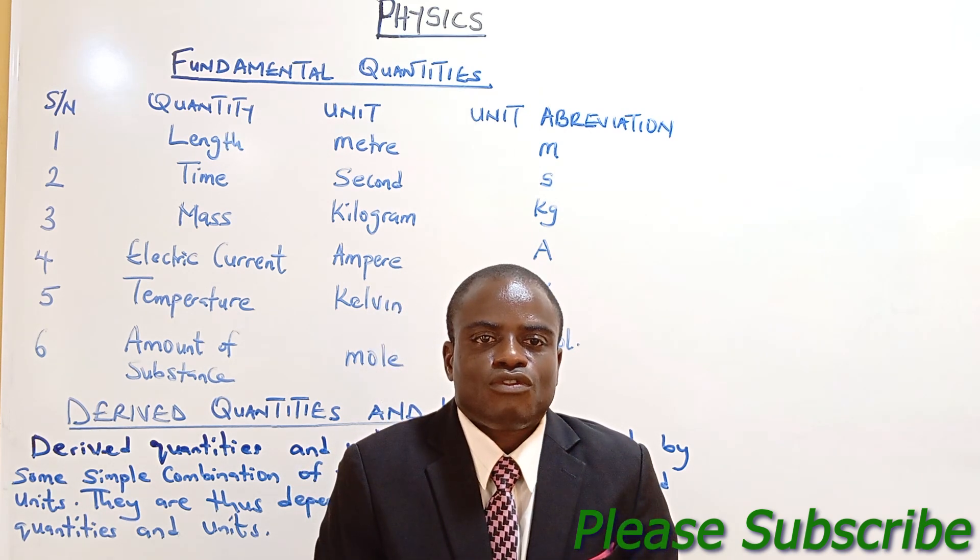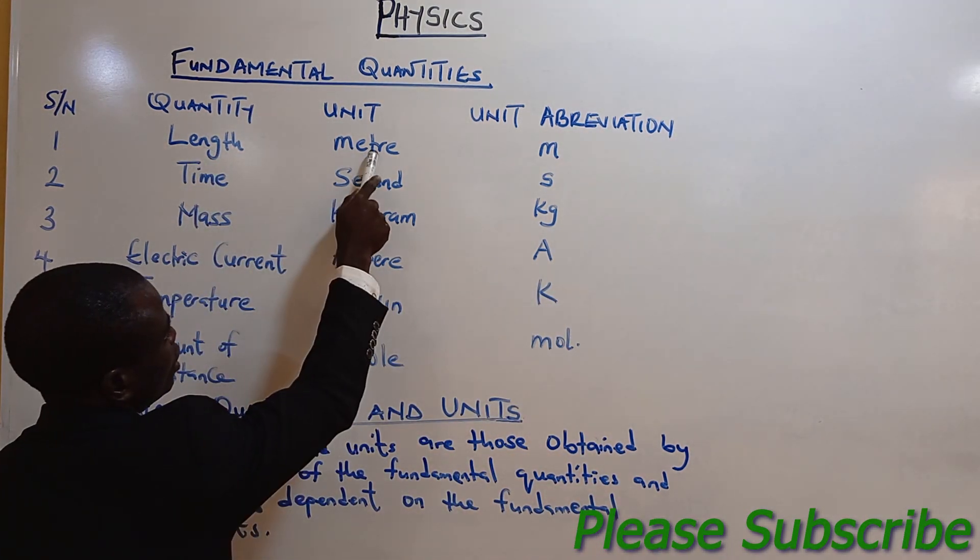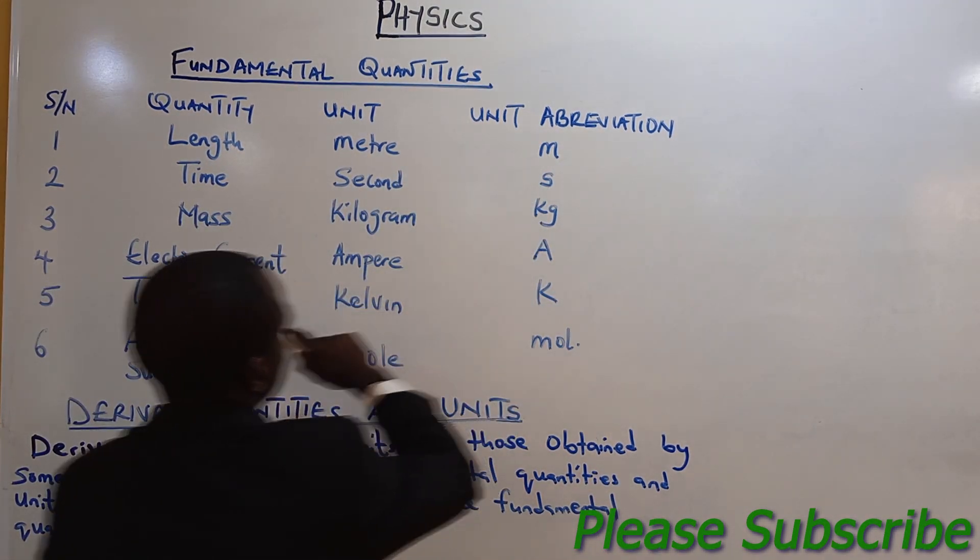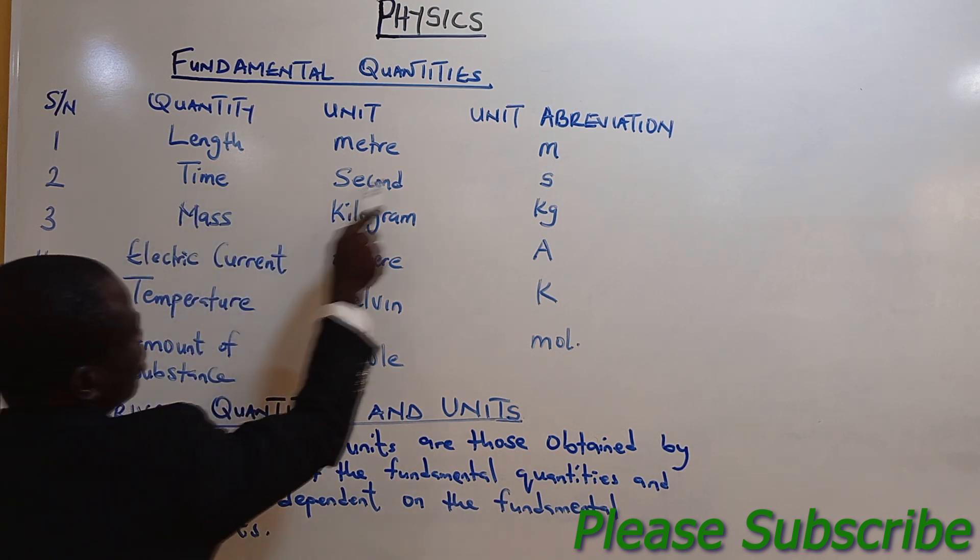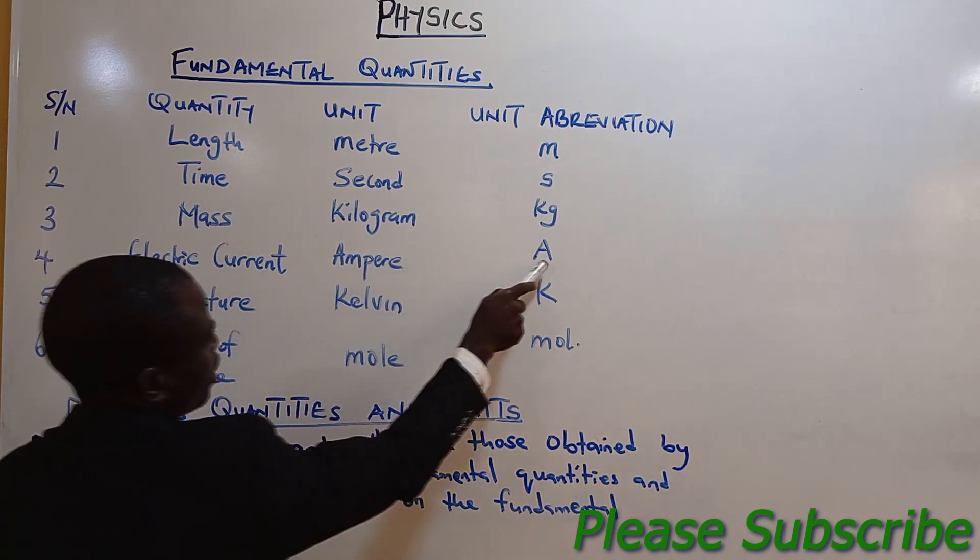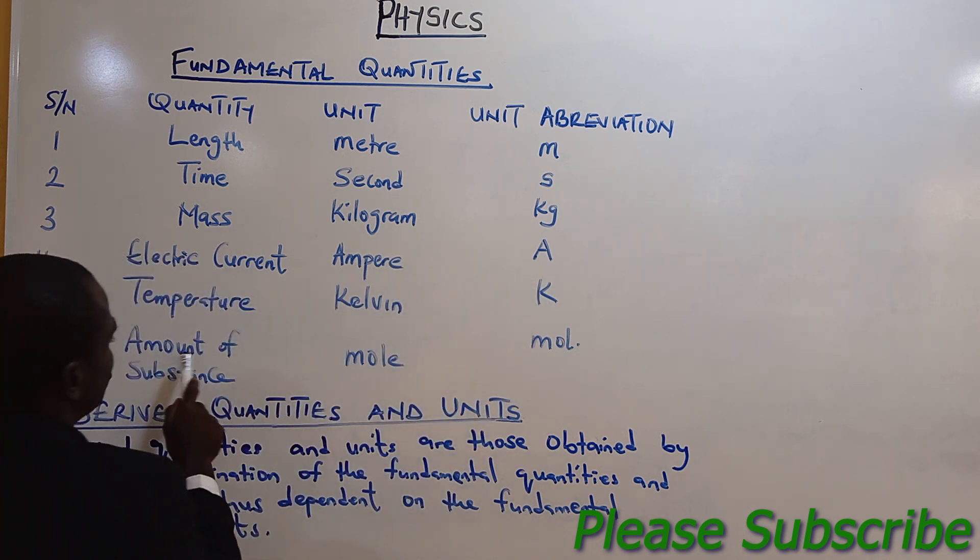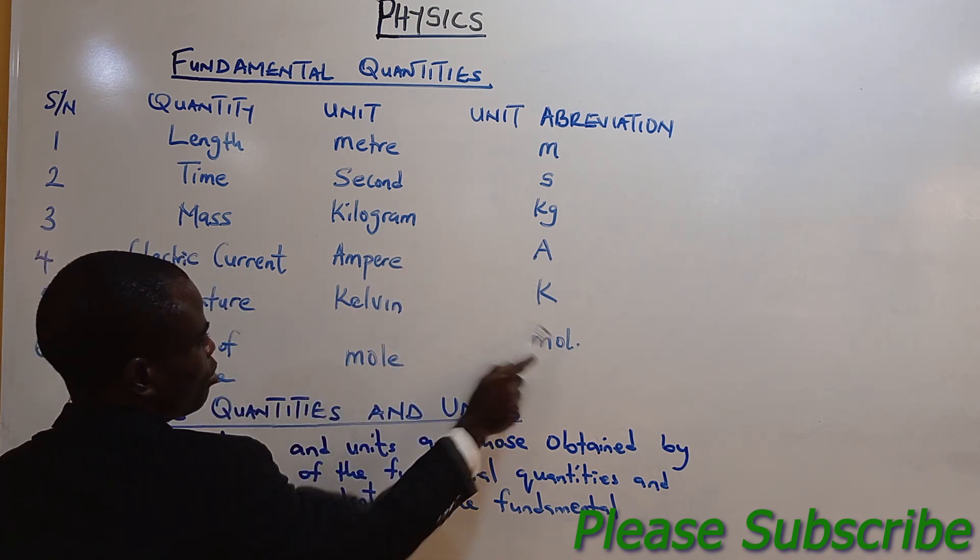Examples of fundamental quantity: length, unit is meter, abbreviation is M; time, second, S; mass, kilogram, kg; electric current, ampere, capital A; temperature, Kelvin, K; amount of substance, mole, mol.